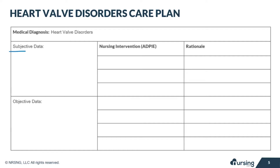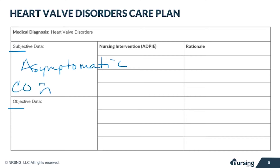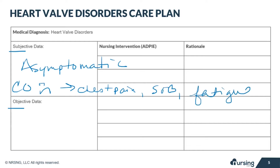Let's take a look at the subjective and objective data that your patient with heart valve disorders may present with. Subjective data refers to things based on your patient's opinions or feelings. Your patient with a heart valve issue may actually be asymptomatic with the exception of a heart murmur. However, if cardiac output is compromised, they may report symptoms of chest pain, shortness of breath, weakness, and fatigue.